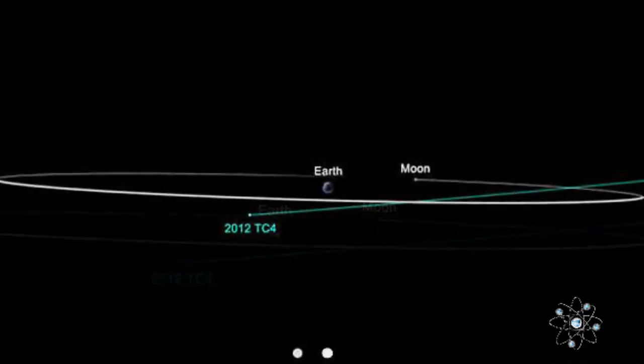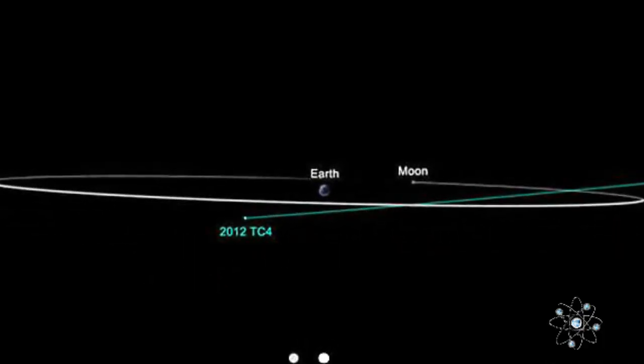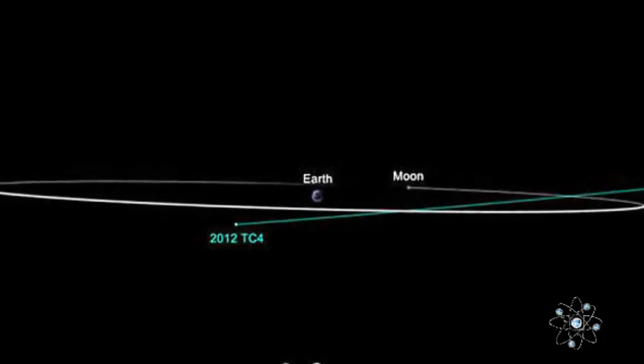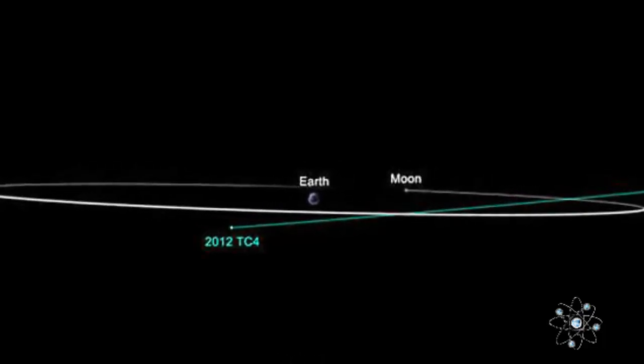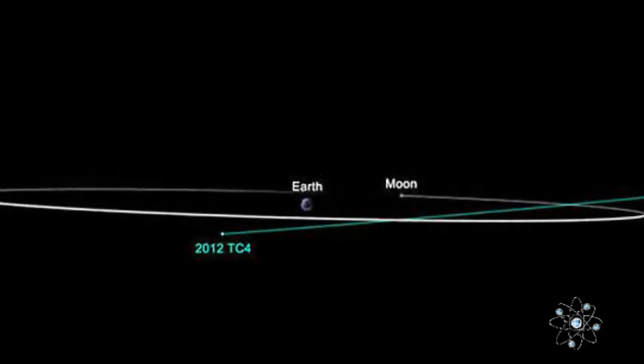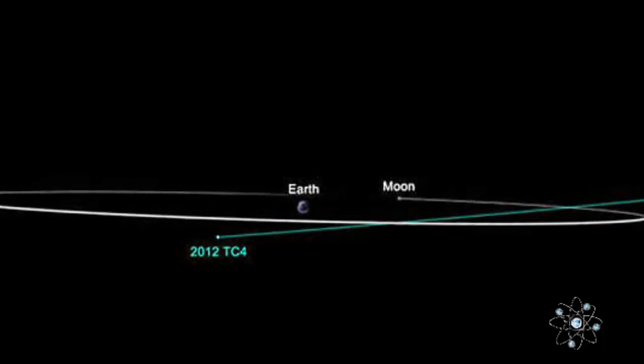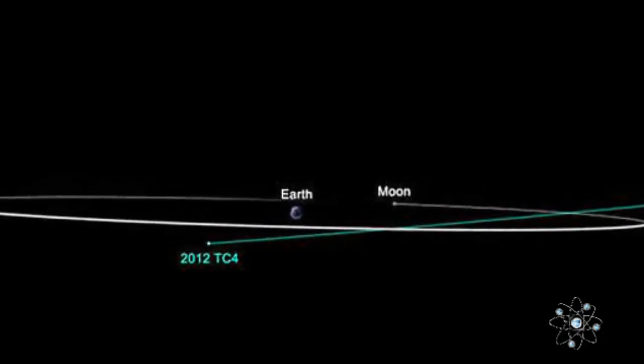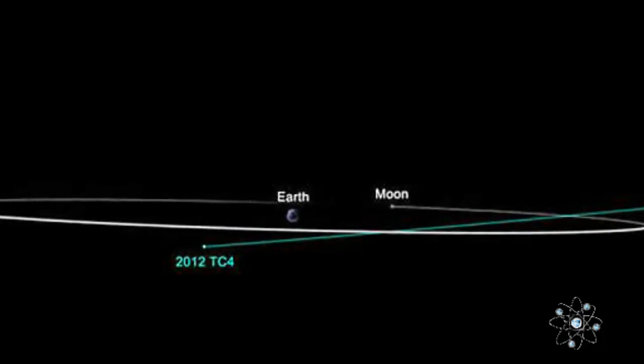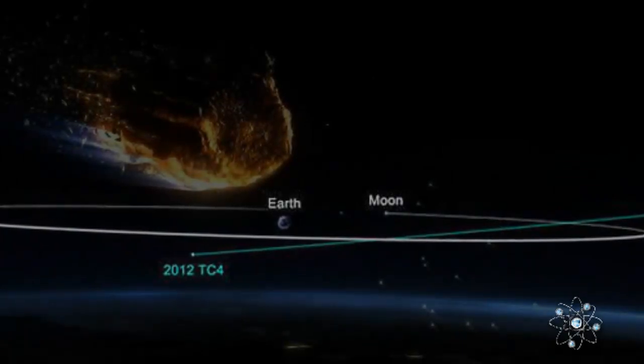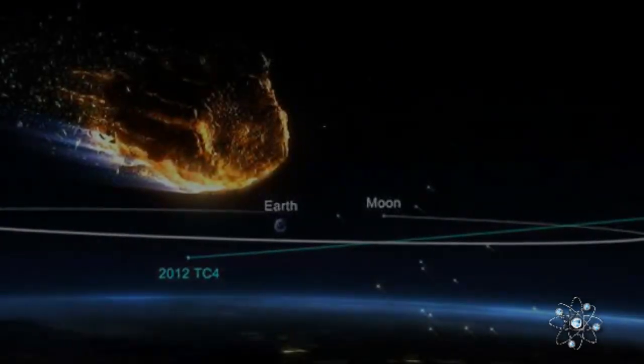A spokesperson for NASA's Jet Propulsion Laboratory told the DailyMail.com, "2012 TC4 was observed only briefly when it was discovered before it was too faint to see. The ongoing observation campaign and the data we collect during this flyby will provide more direct information on mineralogical composition, structure, and size."